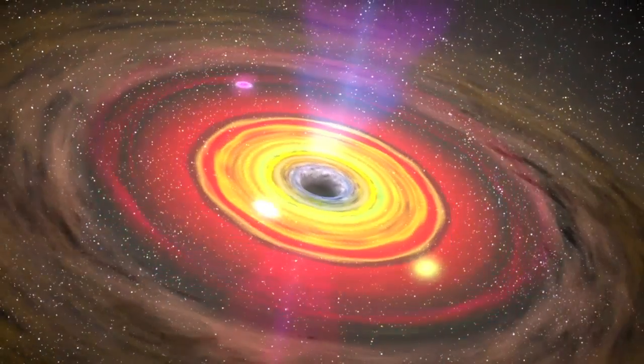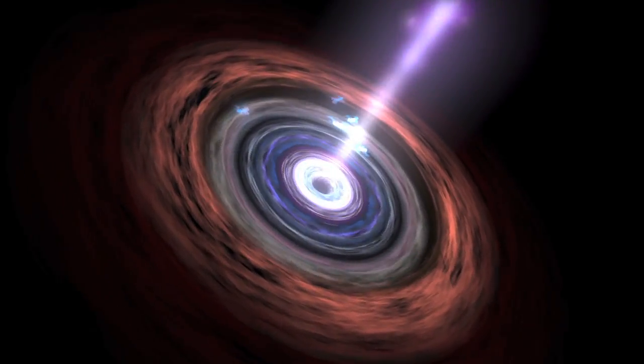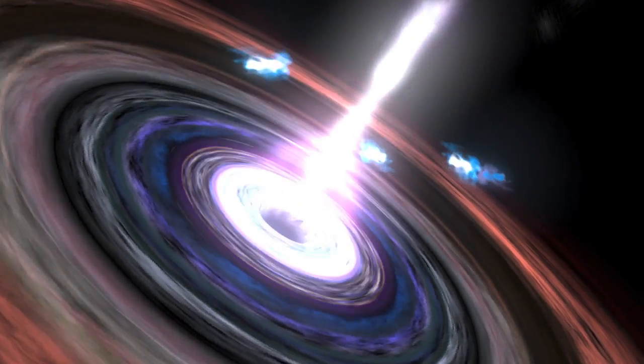As these young stars and clouds swirl around the black hole, some are inevitably devoured, releasing enormous jets of high-energy X-rays, gamma rays, and cosmic rays.